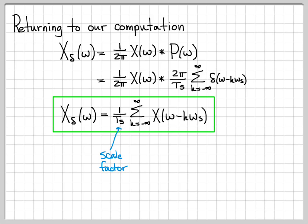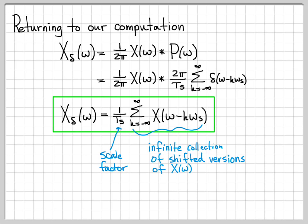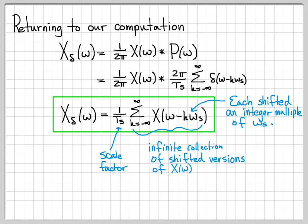This result isn't too hard to analyze. There's a scale factor of 1/T_s out front, and then we have an infinite collection of shifted versions of the original spectrum — copies of x(ω) shifted up and down the frequency axis at integer multiples of the sampling frequency ω_s. So after impulse sampling, whatever your original spectrum looks like, you end up with those shapes repeated at multiples of ω_s. We now have this nice equation for x_δ(ω) that tells us what the Fourier transform of the impulse sampled signal is, and we'll use it in the next video to analyze the right and wrong ways to do sampling.